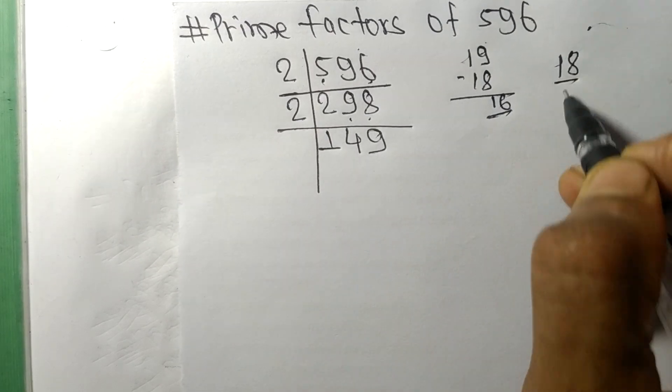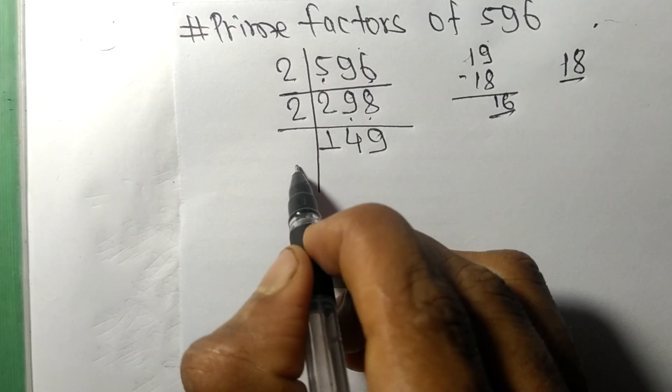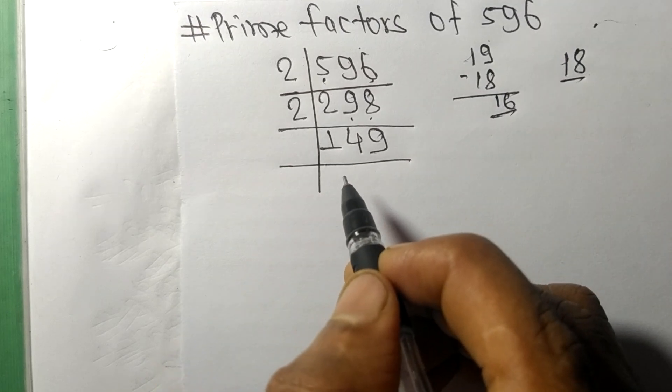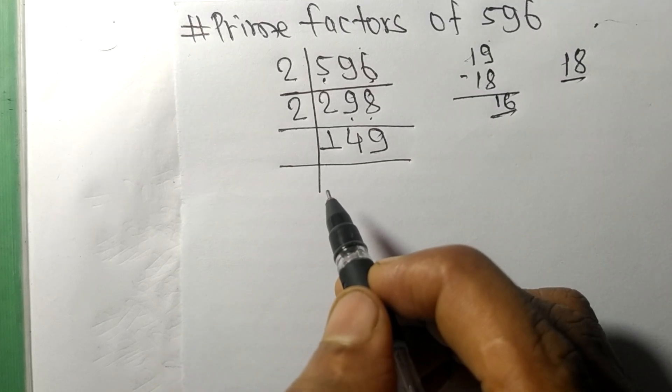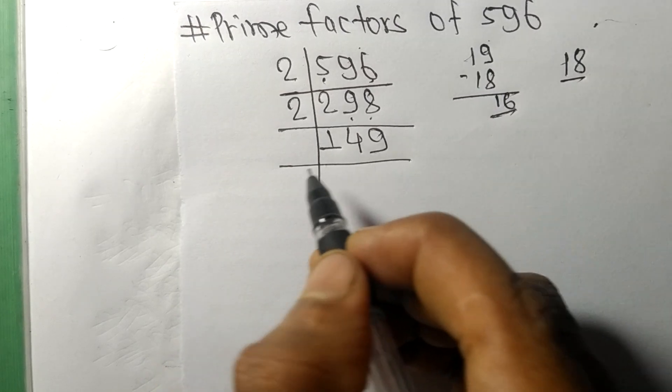2 times 9 means 18. So now we got 149, which is a prime number, so it is divisible by